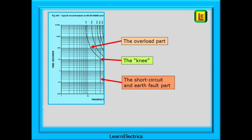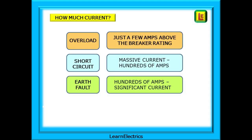Looking at an actual curve again we can see the curved overload part for a slow response. We can see the knee that divides the graph into two, and we have the short circuit part and the earth fault part that are the vertical line of instant tripping. Just to remind ourselves of how much current the different overcurrents will have, an overload is just a few amps above the breaker or fuse rating. Not a lot and it gets a slow response. Short circuit and earth fault currents are very high currents, hundreds of amps, and they have an instant response.